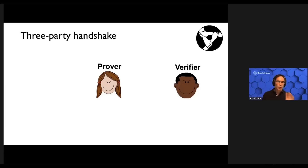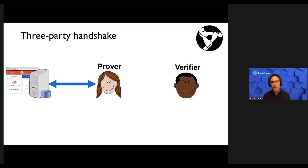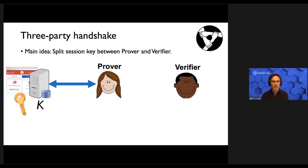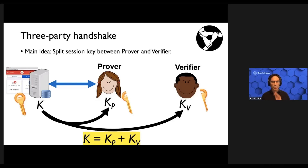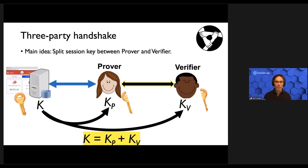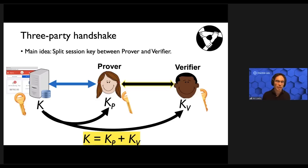When Alice — the prover — logs into a website, the session key she establishes with the server is going to be split on the client side between the prover and verifier. The session key, this all-critical key, is going to be equal to the sum of shares held by Alice and Bob. Neither of them will know the key in its entirety. In order to make this happen, the prover and verifier need to interact in a way I'll describe. I'm not going to describe the full protocol, which is pretty complicated — just a tiny piece to give you some intuition for how it works.